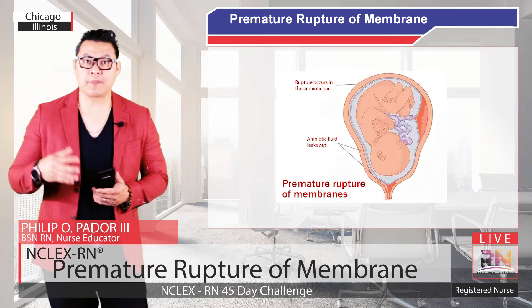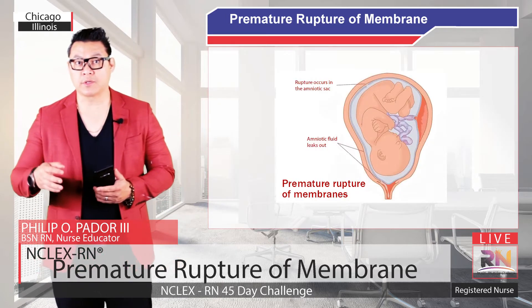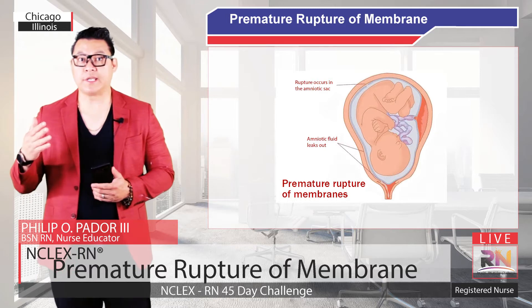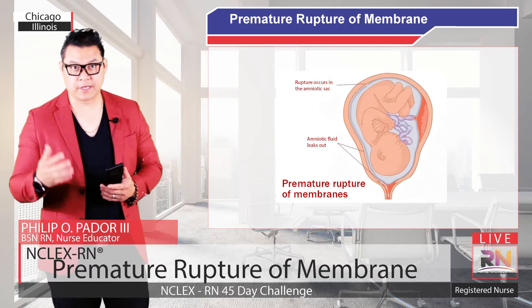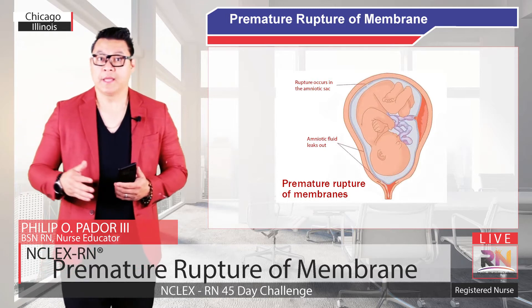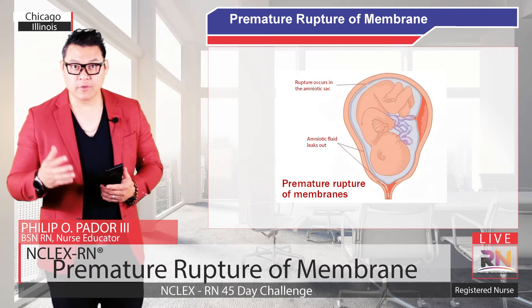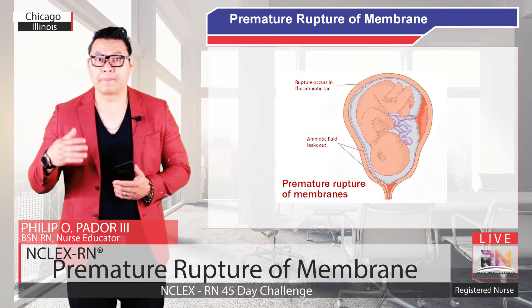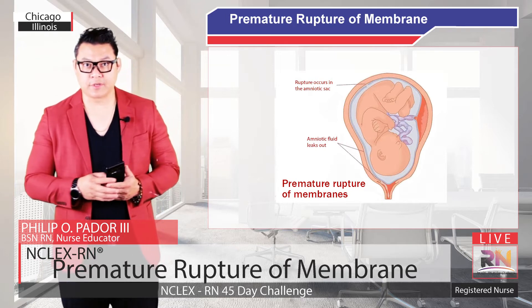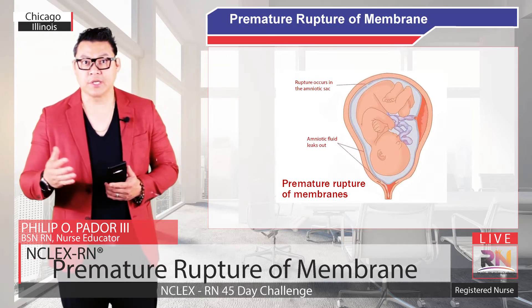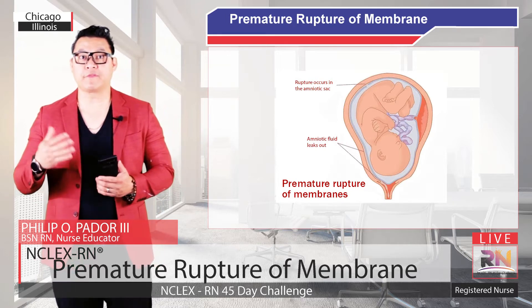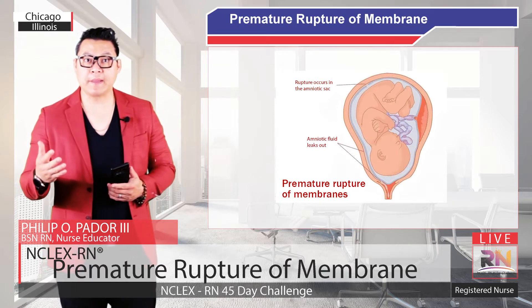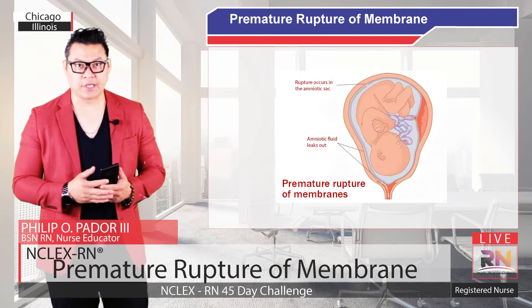PROM is premature rupture of the membranes before the onset of labor. PPROM is a preterm premature rupture of the membranes occurring before 37 weeks estimated gestational age.